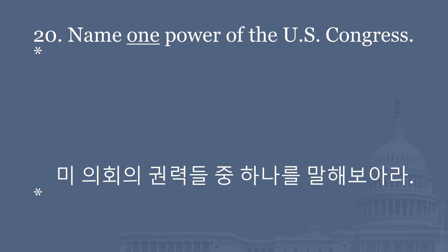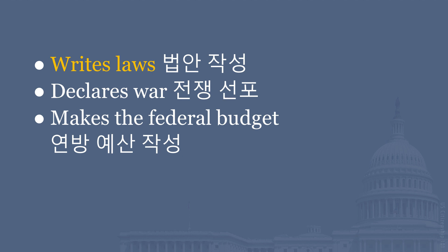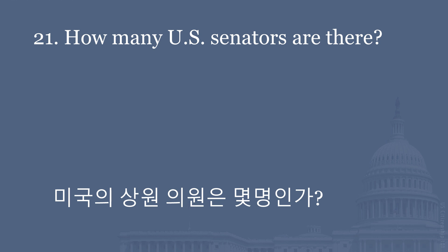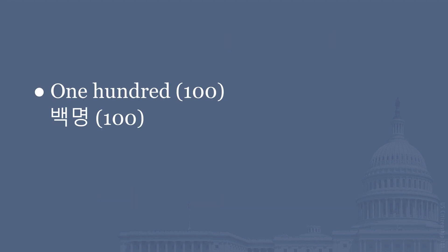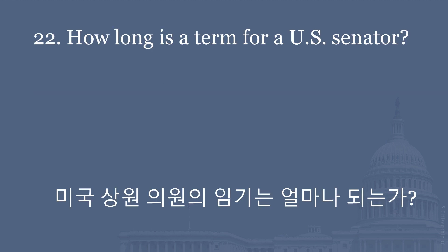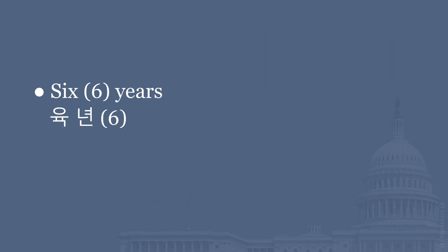Name one power of the U.S. Congress. Writes laws. Declares war. Makes the federal budget. How many U.S. Senators are there? One hundred. How long is a term for a U.S. Senator? Six years.